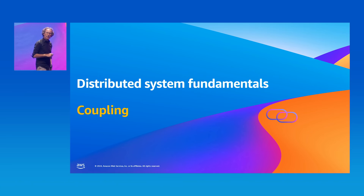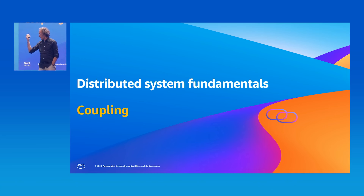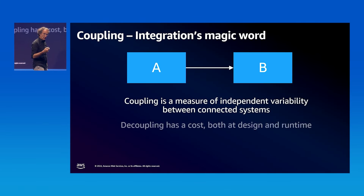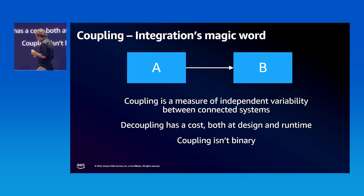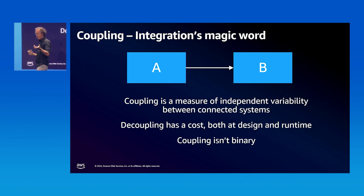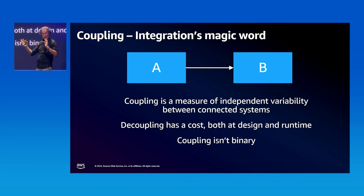As soon as you have two boxes and a line, somebody will say you need to make that loosely coupled. But architecture is about trade-offs — there's always something that has an issue. You cannot just follow simple advice like 'always decouple everything.' Coupling is a measure of independent variability: if B changes, does A have to change? Change comes in many flavors — functional change, data format change, location change, performance change, availability change. These are all aspects of coupling.